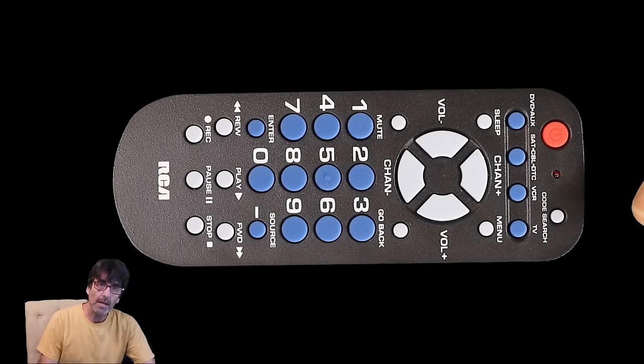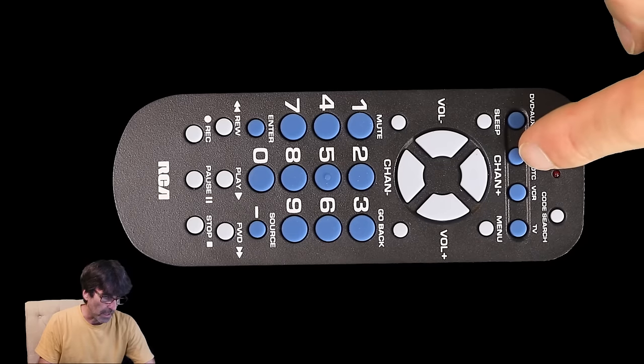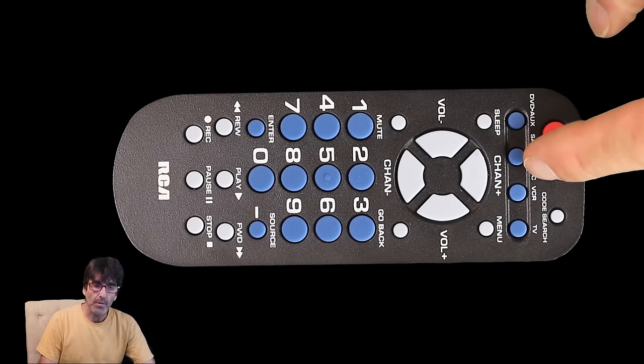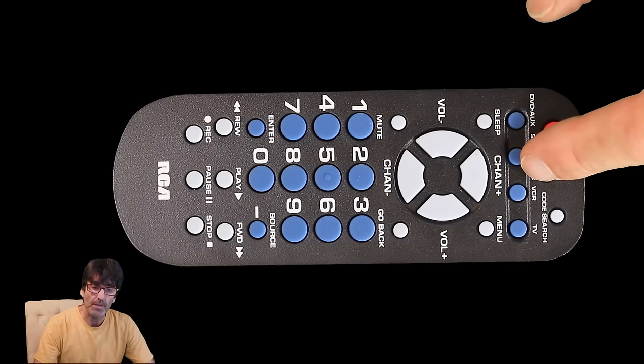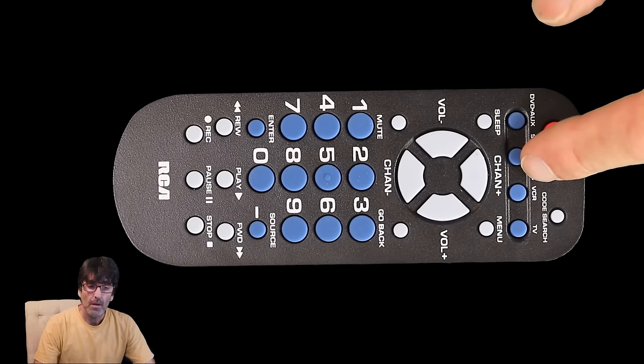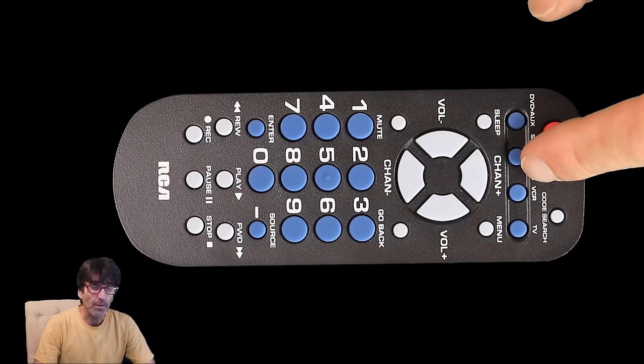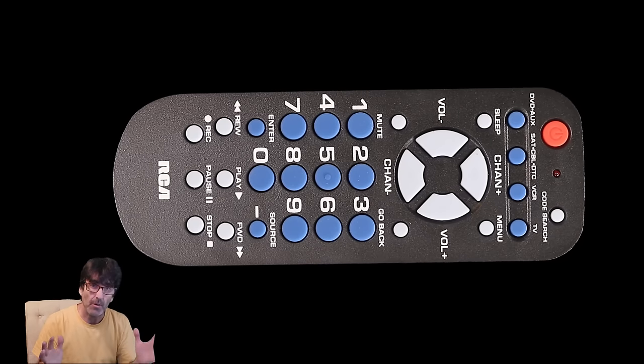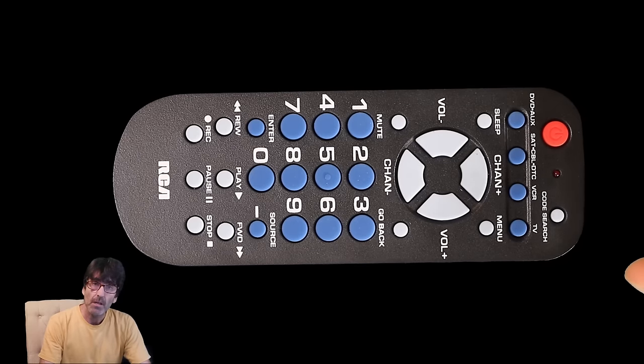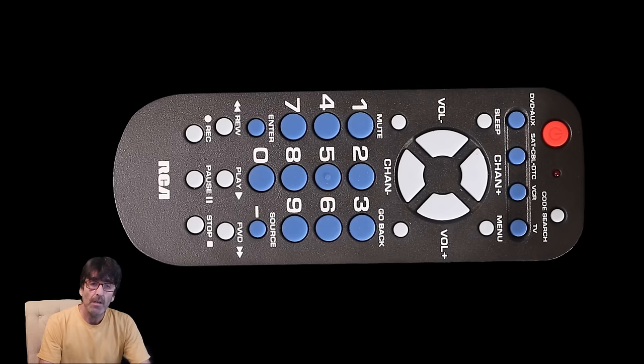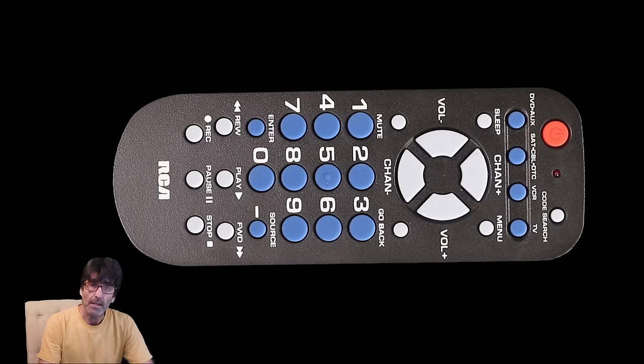Now last but not least, I'm going to program this to a dish network satellite box. That's using this button here. And it should be important to remember that if you have a dish and you're using one receiver to control more than one room, this remote will only work in the room where the dish box is physically located at. Reason being is the secondary remote for the dish uses a UHF radio and this remote is only infrared.